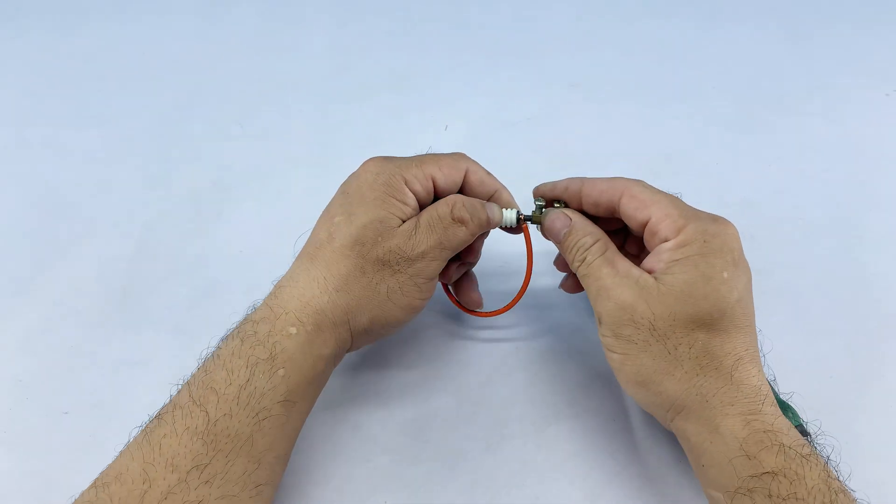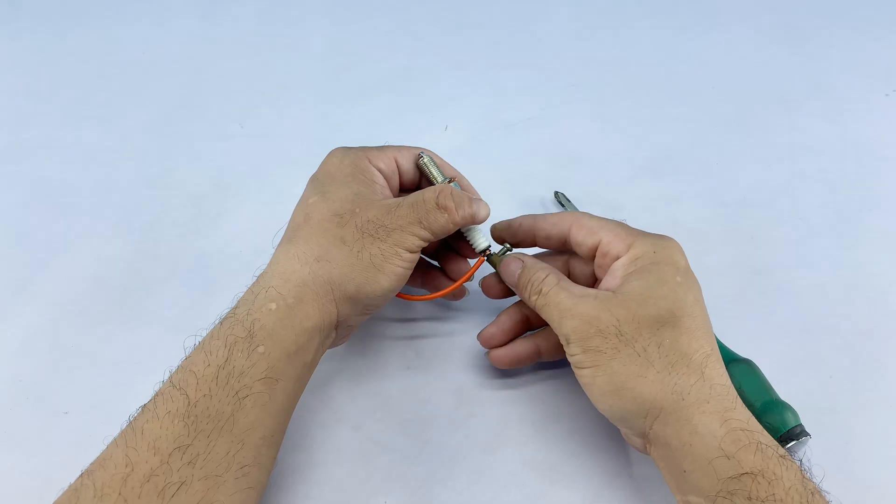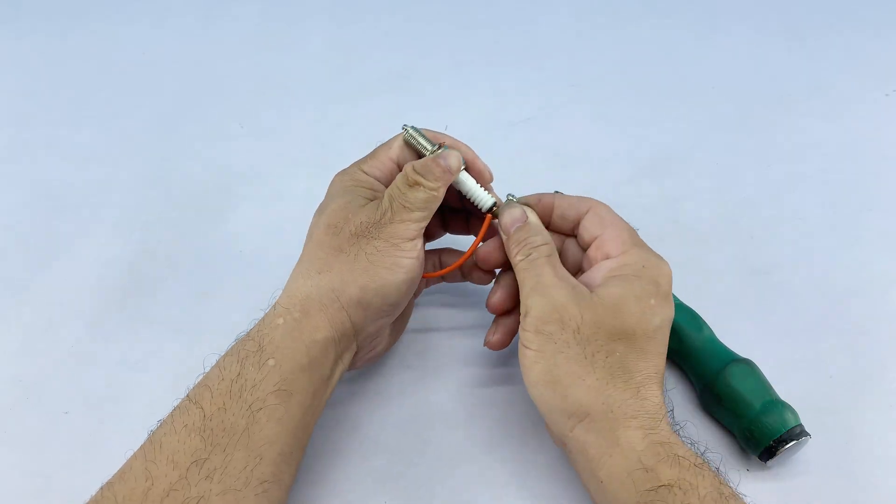I'm then securing this metal connector to the looped wire on the spark plug, again with the screwdriver, ensuring a tight fit.